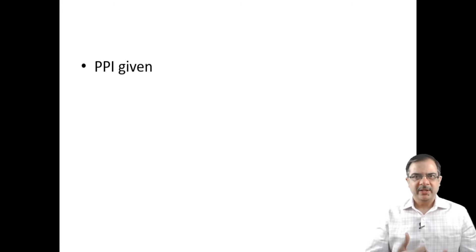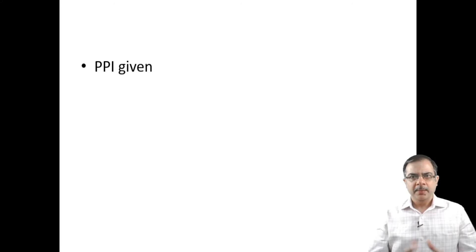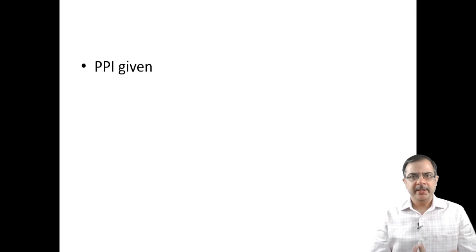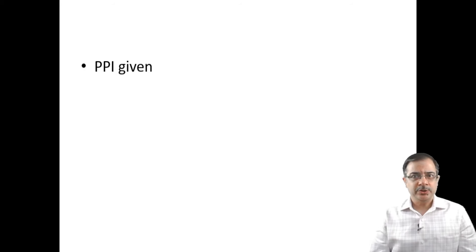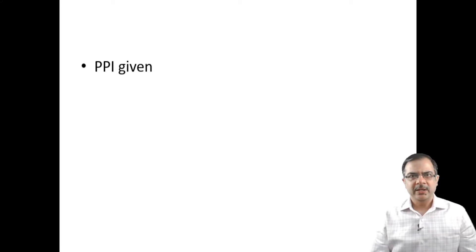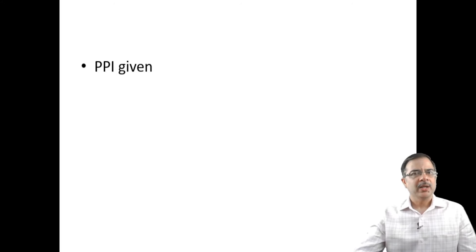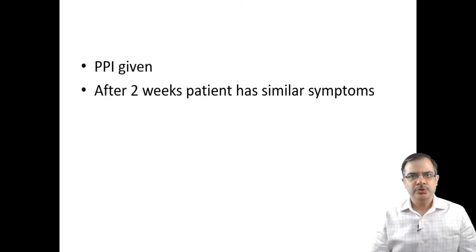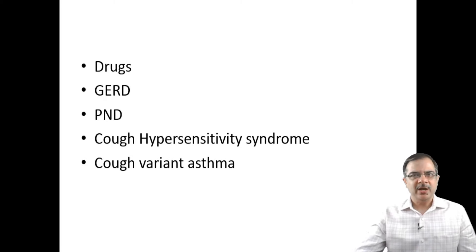We empirically started the patient on a PPI, because proving GERD as the cause of cough requires invasive esophageal pH studies, and even then one cannot reliably attribute symptoms to GERD. So in peripheral health centers with limited resources, empirical treatment is reasonable. The patient was started on rabeprazole and asked to return after two weeks, but symptoms were similar — so drugs and GERD were ruled out.